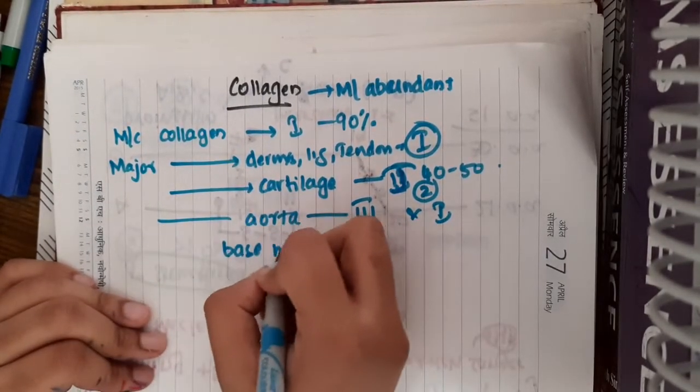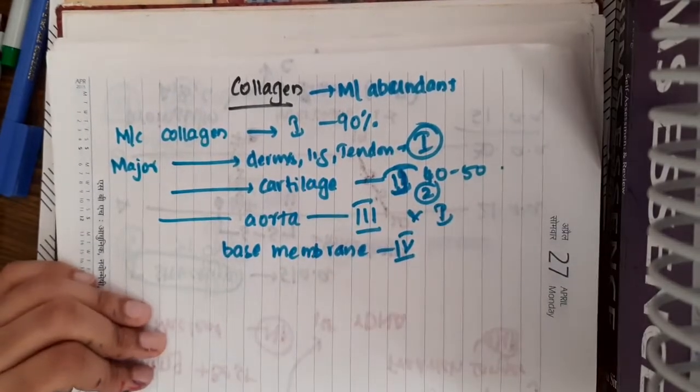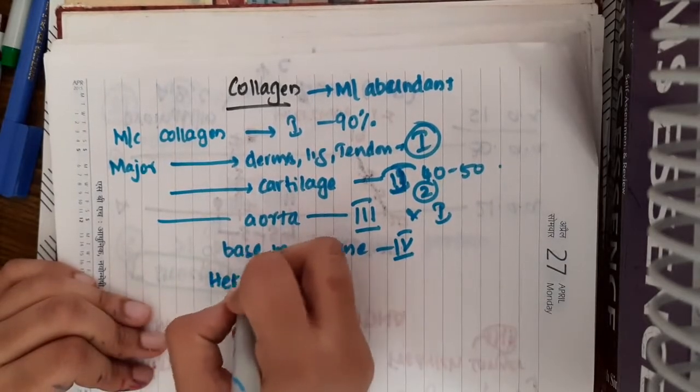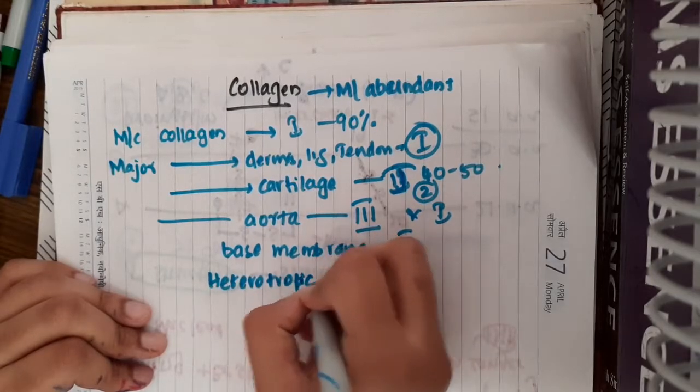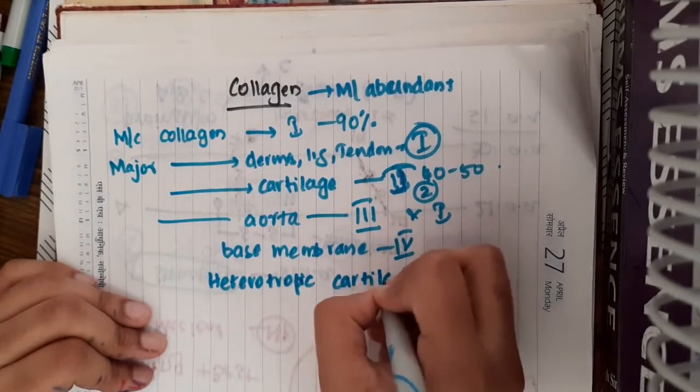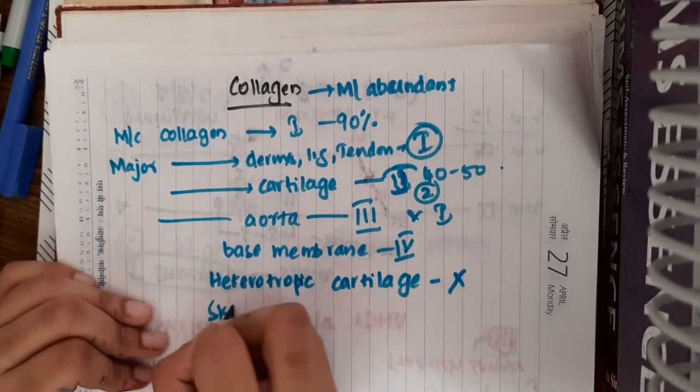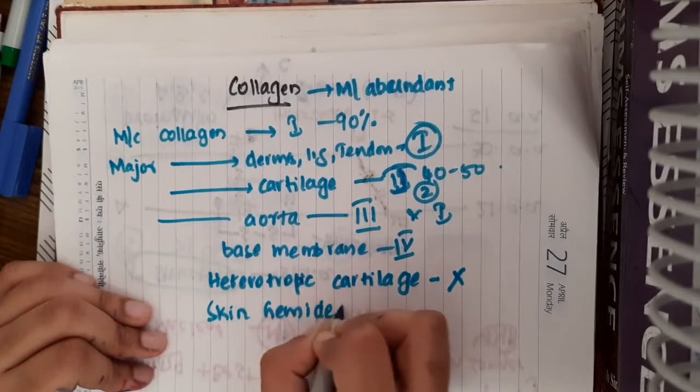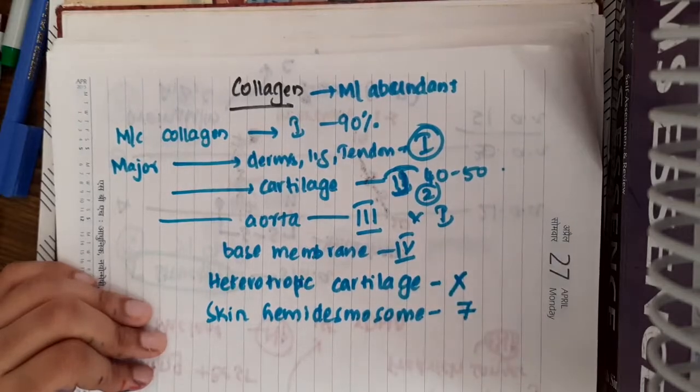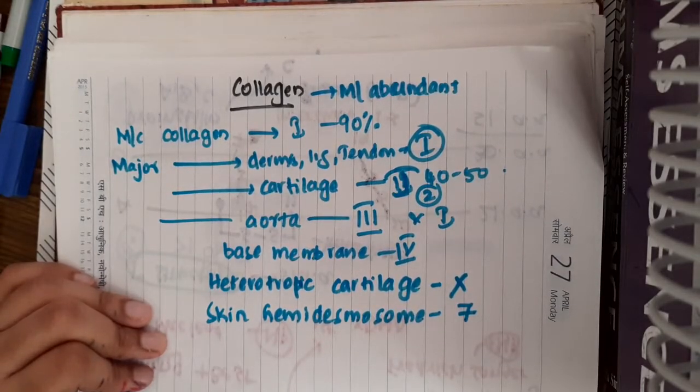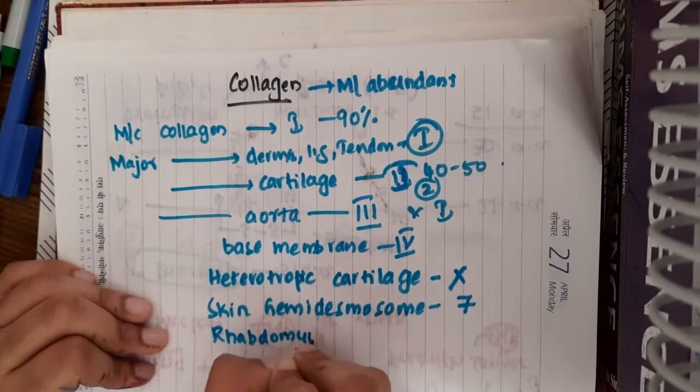Major collagen present in basement membrane is mainly type 4 collagen. Then, major collagen present in hypertrophic cartilage is type 10 collagen. In skin hemidesmosomes, the major collagen is type 7 collagen.